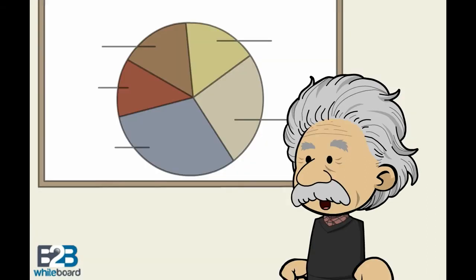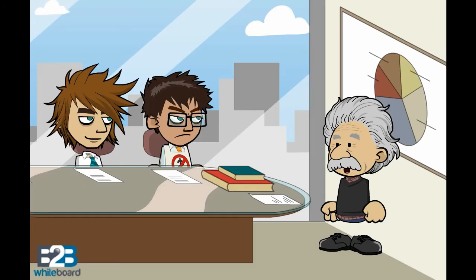The national debt clock is a billboard-sized running total dot matrix display, which constantly updates to show the current United States gross national debt and each American family's share of the debt.